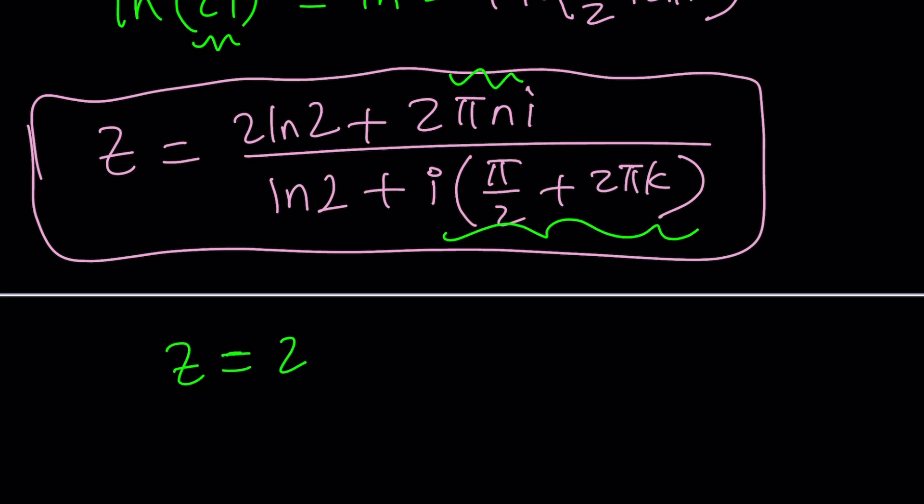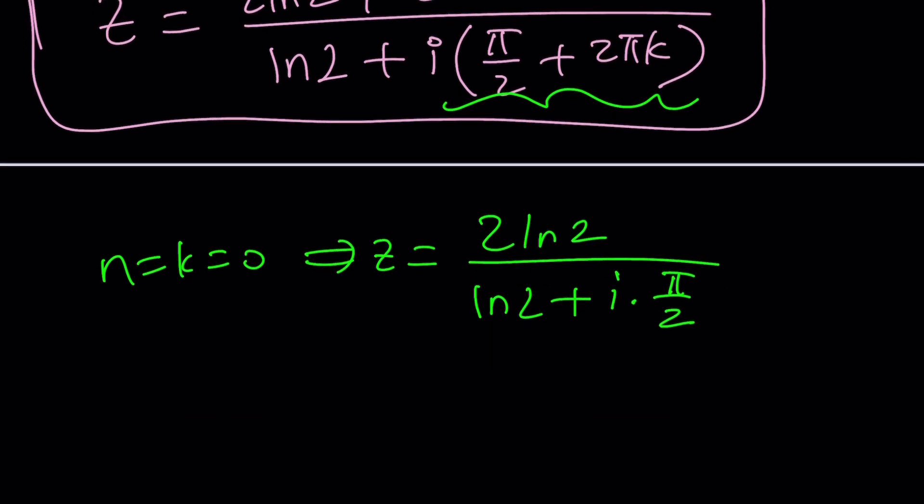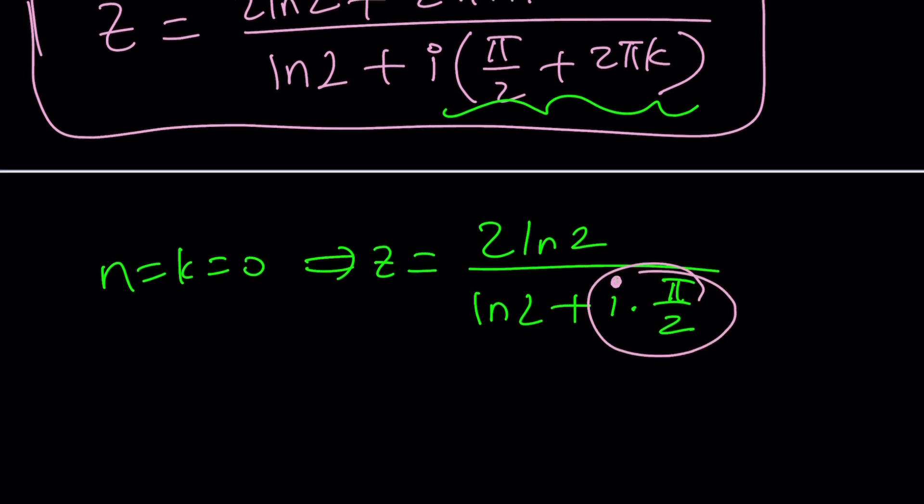Now, notice that if we didn't have these additional pieces here and here, then we would be getting z equals 2. But obviously, that's not a solution. I'm not saying that is a solution because even if n equals 0, k equals 0 is not going to give you that. Let me show you how. For example, if n and k are both 0, then we get the specific solution 2ln2 divided by ln2 plus i pi over 2, which is kind of like the principal value, right? Now, take a look at this. We still can't get rid of this piece here, right? That's an imaginary part or the, yes, that is the imaginary part of the denominator. It's a complex number, right? Like a plus bi. By the way, that's the name of this channel, right? Did you know that? So, but if you were able to make that disappear, z would be 2. Where does that come from?